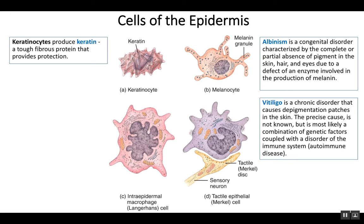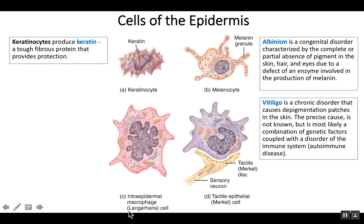Melanocytes exocytose the melanin — it gets produced and then spit out from the cells. Then, to protect themselves, the keratinocytes endocytose that melanin so all the cells can be protected. Since 90% of the epidermis is keratinocytes, you want to protect all those cells from UV light, but keratinocytes don't produce melanin, so the melanocytes donate their melanin to the keratinocytes. The macrophage is also known as a Langerhans cell, and the tactile cell is part of your sense of touch.